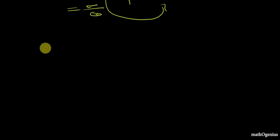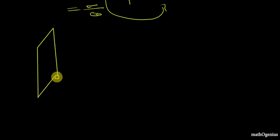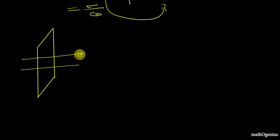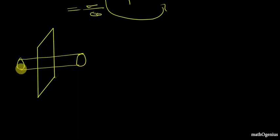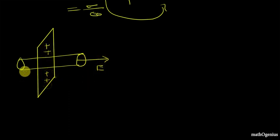Let us first calculate σ/2ε₀ from an infinite plane sheet. We take a Gaussian cylindrical surface. We calculate the perpendicular component — the parallel component is zero. If the sheet is positively charged, the electric field E points outward on both sides, and flux is added since it's a scalar quantity.